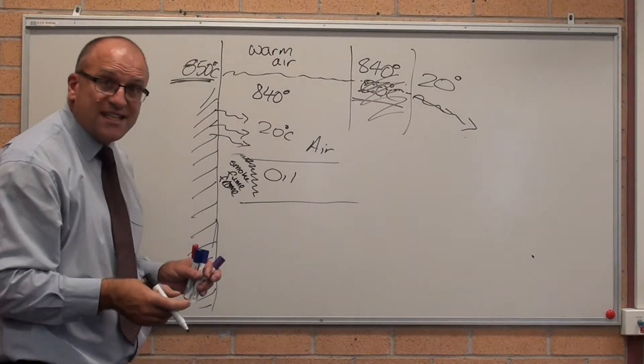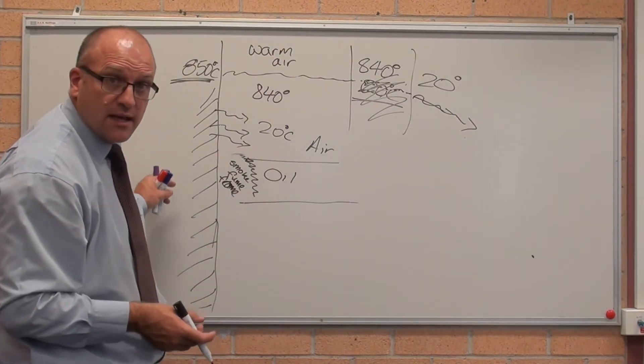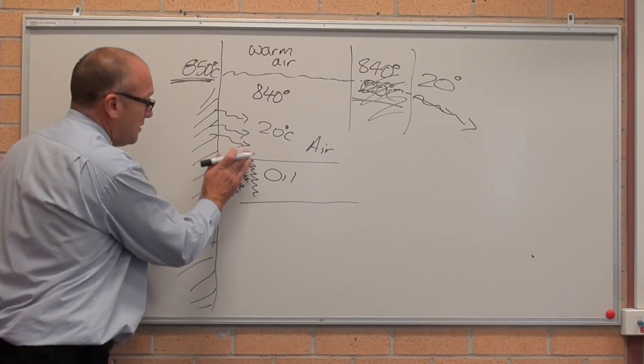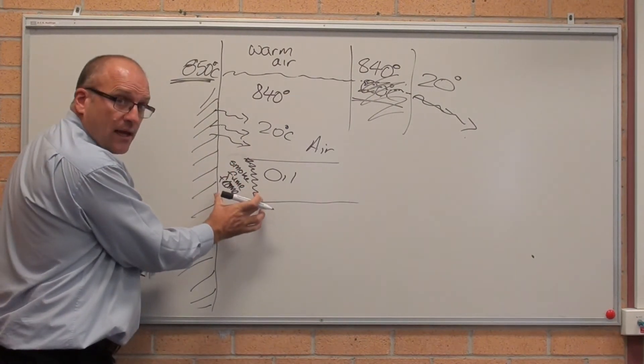Essentially, the oil turns into gas where it touches the 850 degrees, and it makes a massive amount of gas, so the layer is thick.